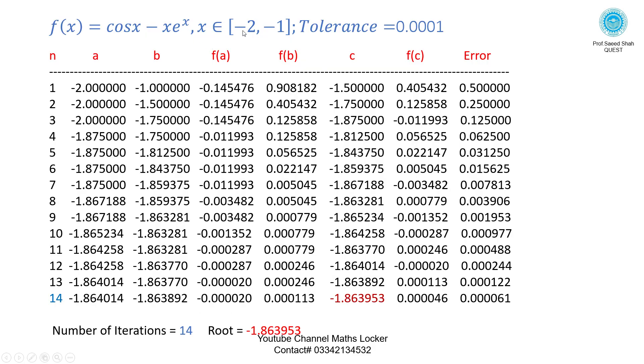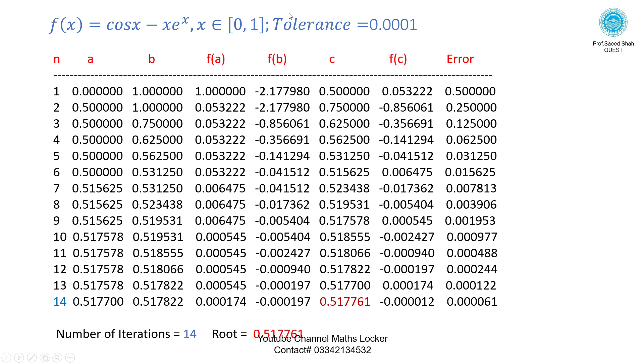Calculate the real root between minus 2 and minus 1. Up to 14 iterations, answer is -1.863953. Second root between 0 and 1, after 14 iterations, the answer is 0.517.